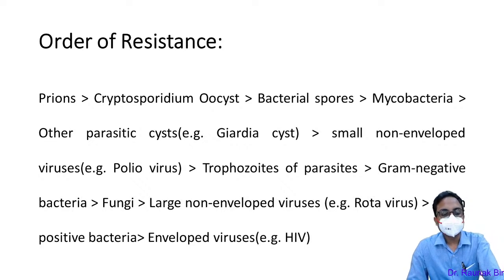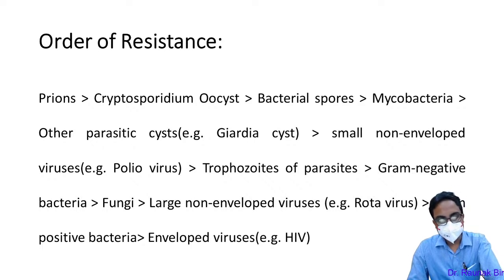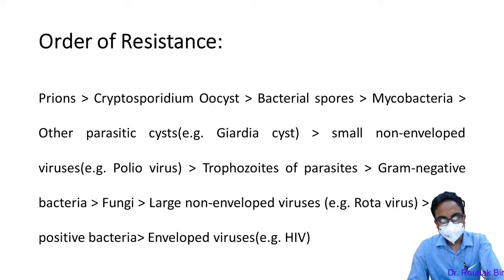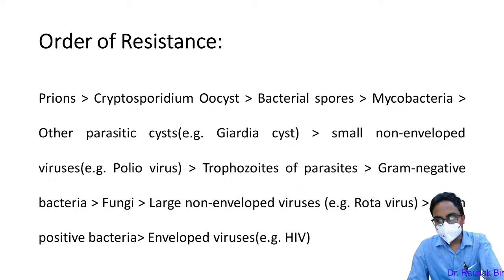Order of resistance: firstly, the most resistant organism is prions, which are misfolded proteins, followed by Cryptosporidium oocysts, then bacterial spores, Mycobacterium, other parasitic cysts like Giardia and Entamoeba — cysts of protozoan parasites — then small non-enveloped viruses like poliovirus and norovirus, which are small gastroenteric viruses. These are the most hardy viruses to be killed among the spectrum of viruses.